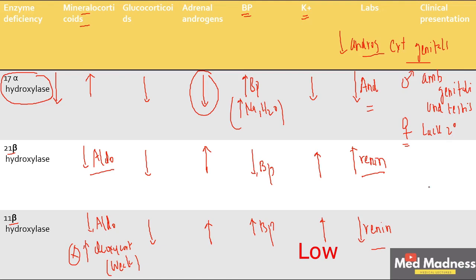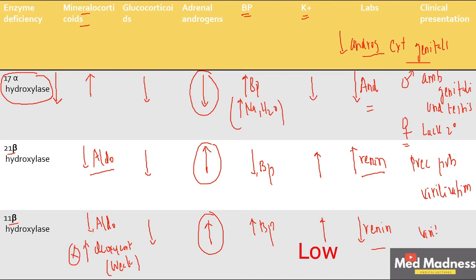In 21-beta and 11-beta hydroxylase deficiency, androgens are increased, causing precocious puberty. In females, virilization occurs — development of hair in pubic and axillary areas. In 21-beta hydroxylase deficiency, decreased aldosterone leads to low sodium in the blood, known as salt wasting, which is seen in infants. Glucocorticoids are always decreased in all cases — remember that as a key starting point.